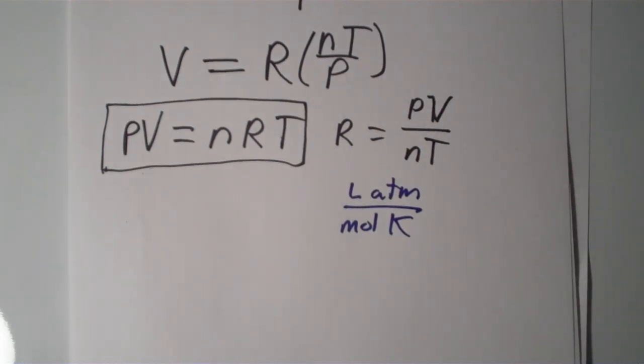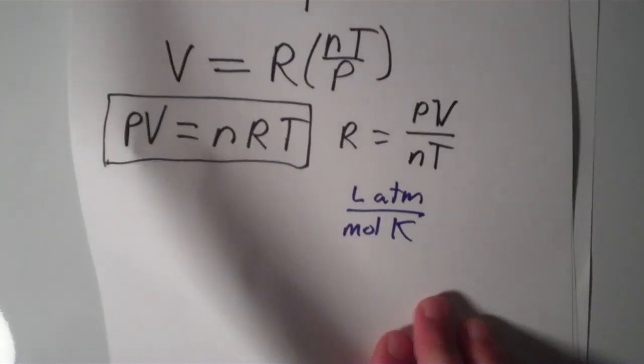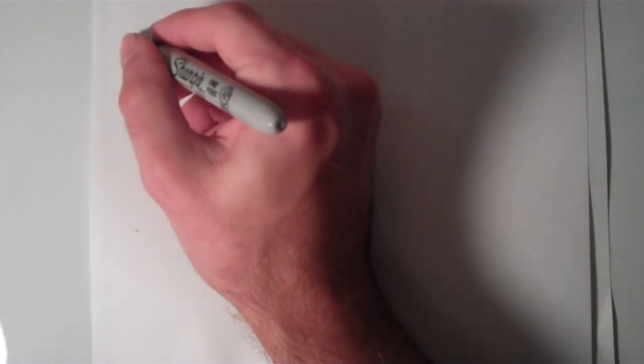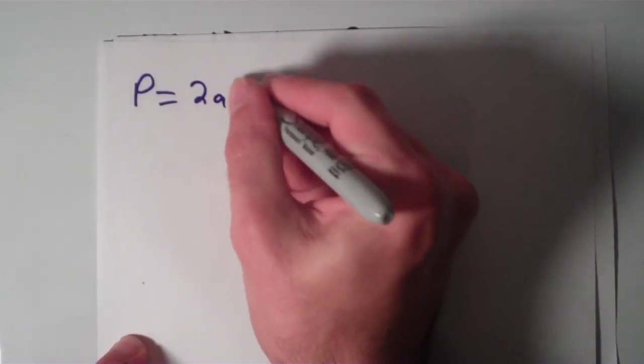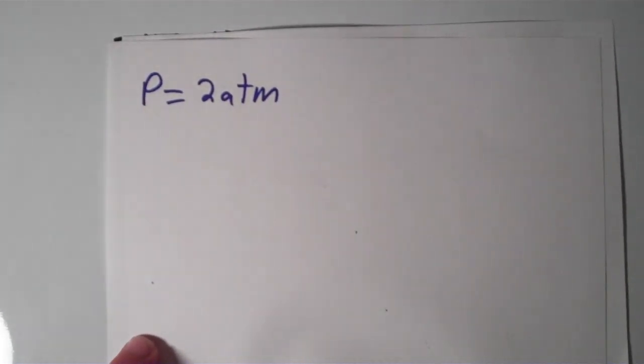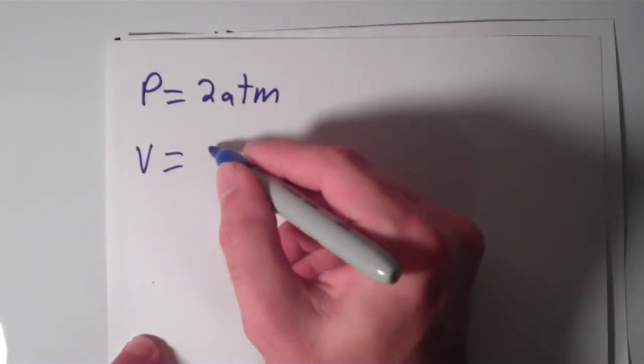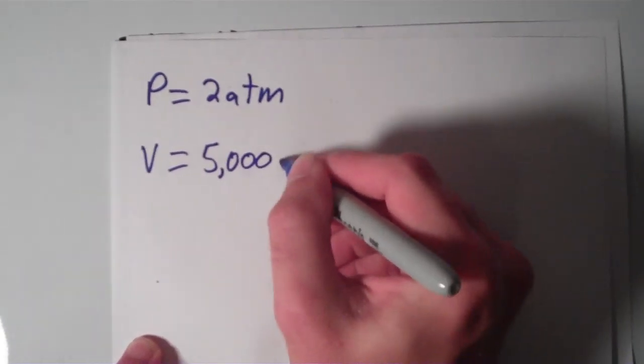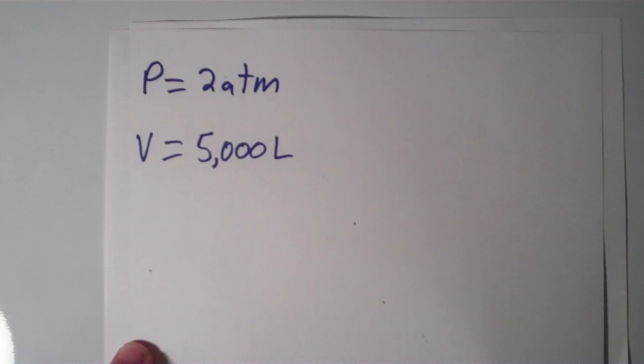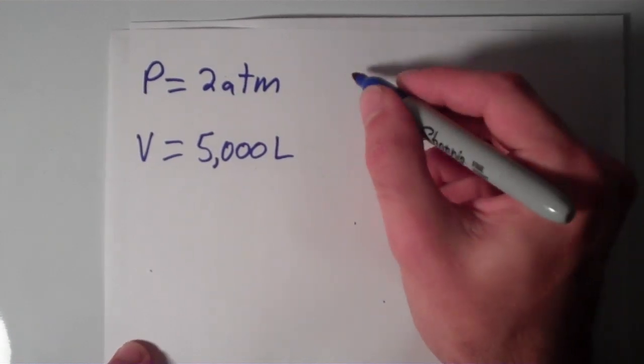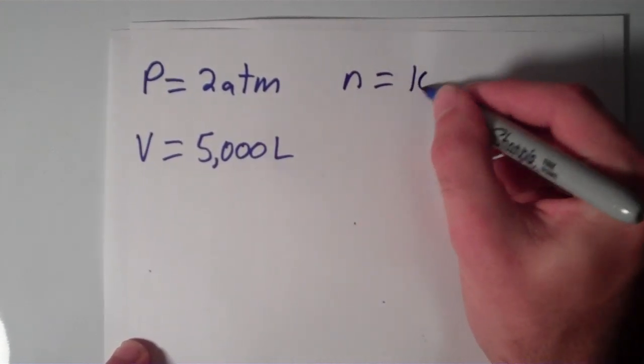So let's do an example, shall we? Alright, so suppose I have a gas and the pressure of this gas is 2 atmospheres. And let's say the volume of the gas is 5000 liters. And suppose I have 100 moles of this gas, so n equals 100 moles.